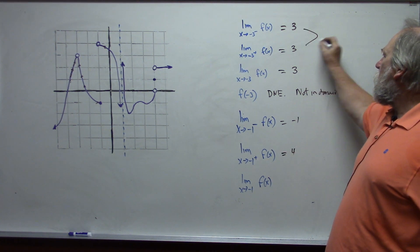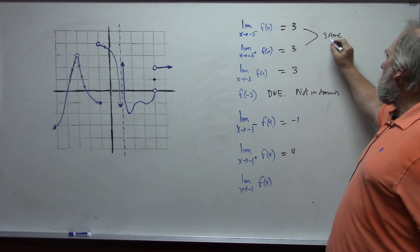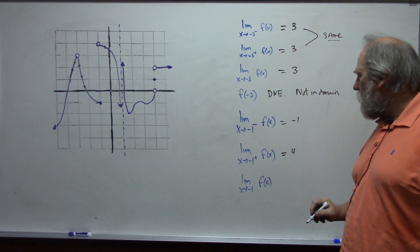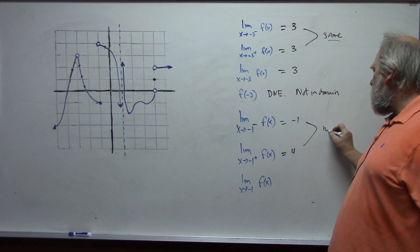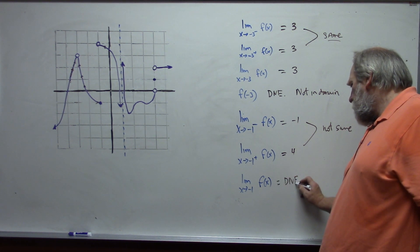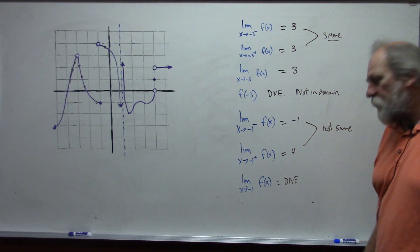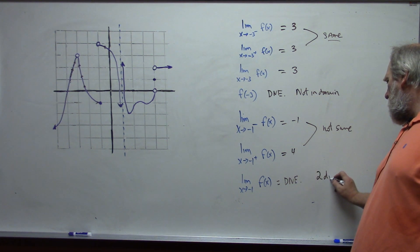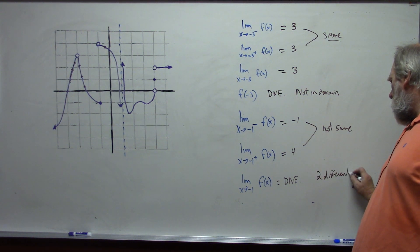Since these were the same, the limit was 3. Since these are not the same, the limit does not exist. They are two different one-sided limits.